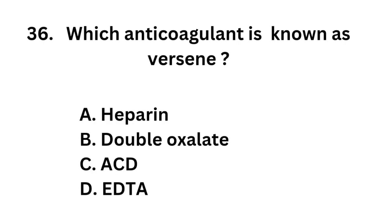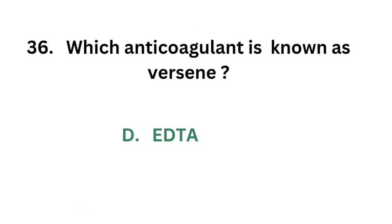Question number 36: Which anticoagulant is known as Vercine? Option A: Heparin. Option B: Double oxalate. Option C: ACD. Option D: EDTA. The correct answer is option D: EDTA. EDTA is also called as Vercine or sequestrine.